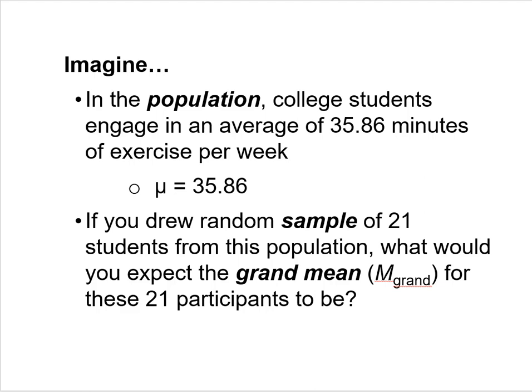Let's do a thought experiment. Imagine that in the population, college students engage in an average of 35.86 minutes of exercise per week. Therefore, μ = 35.86. If you look at the entire population of college students across the world and measured how many minutes of exercise they got, you would find an average of 35.86 minutes per week.